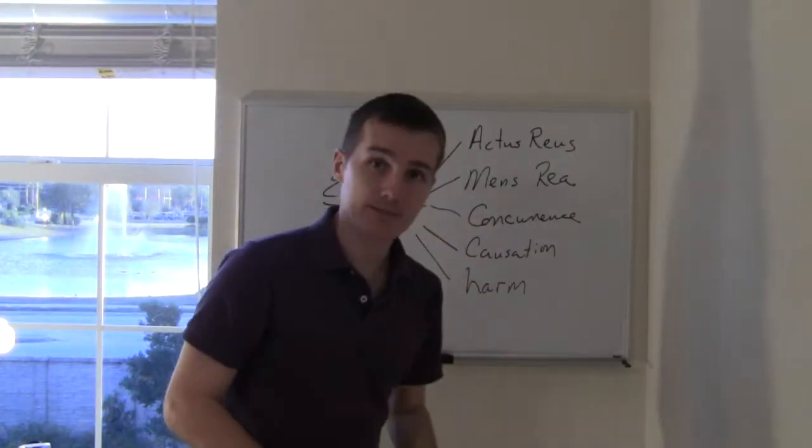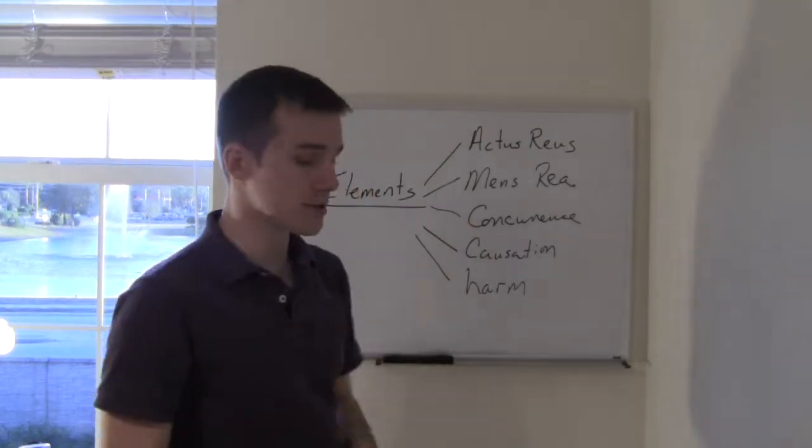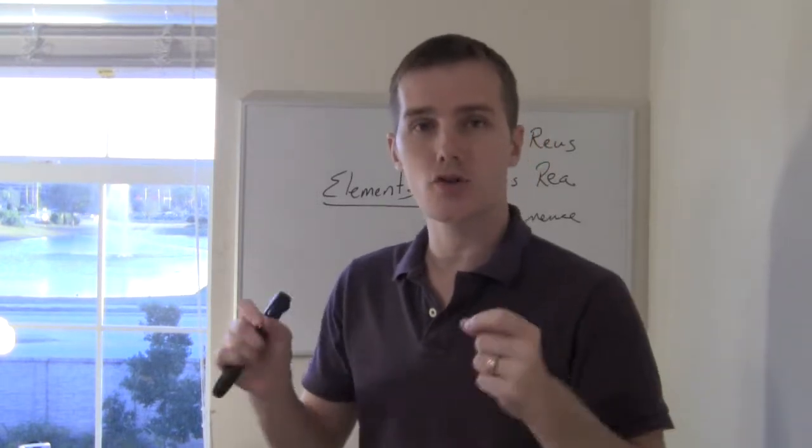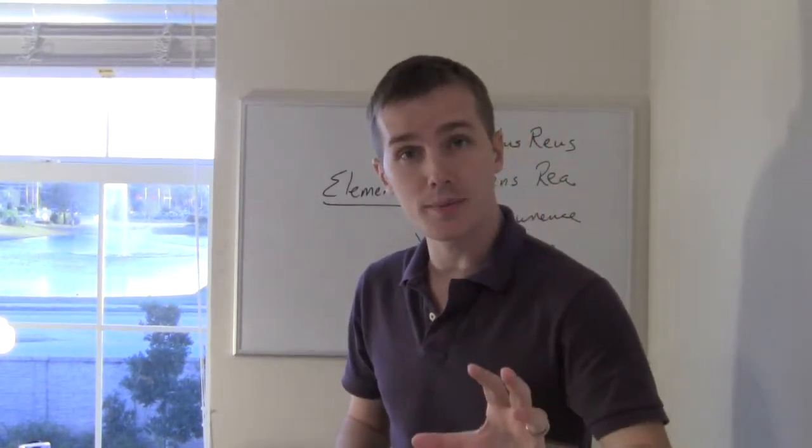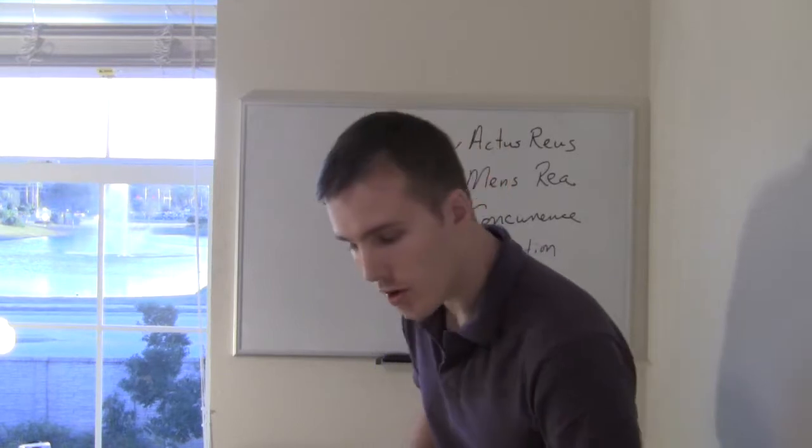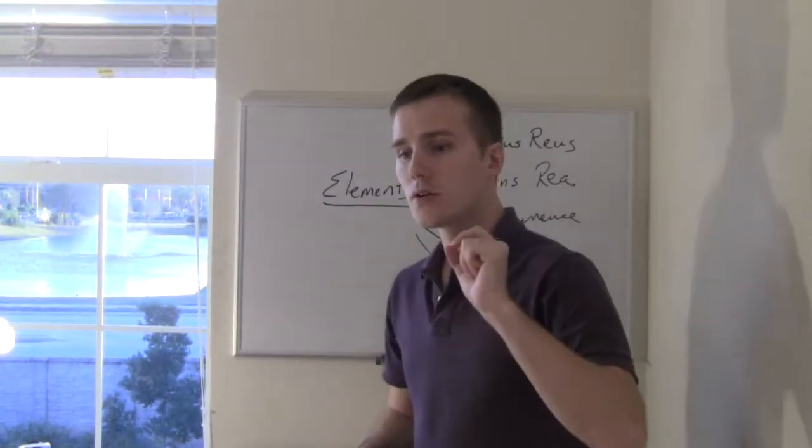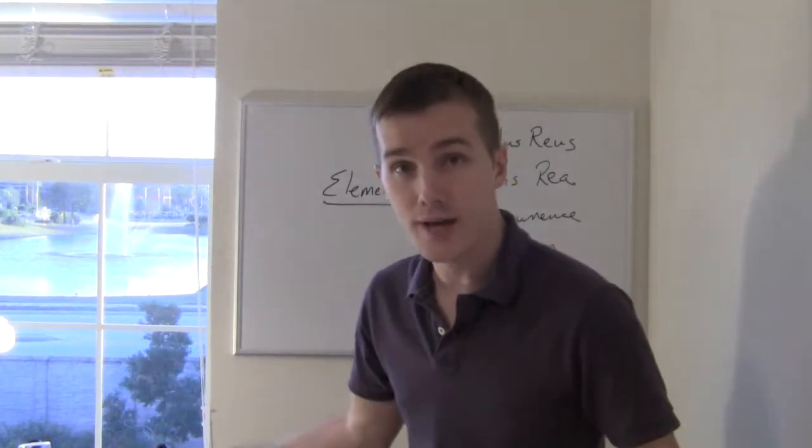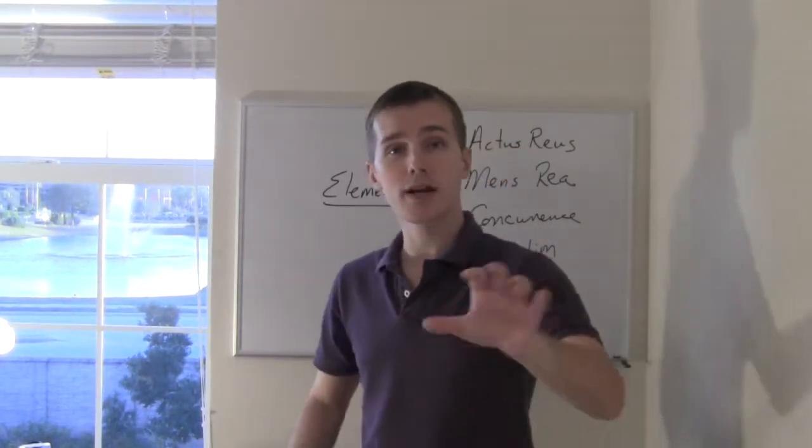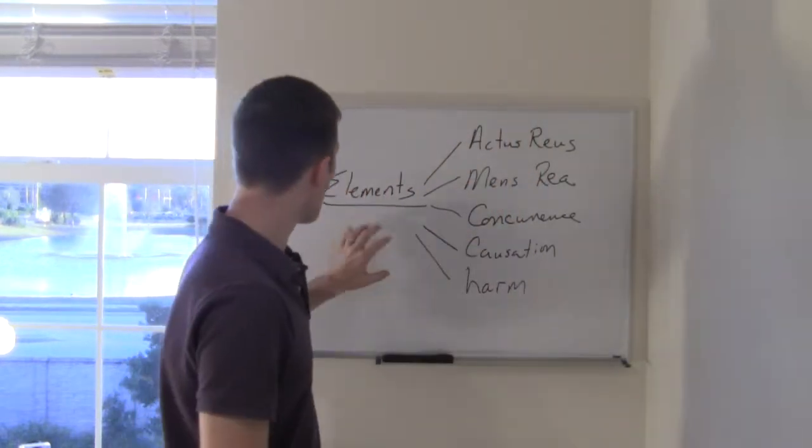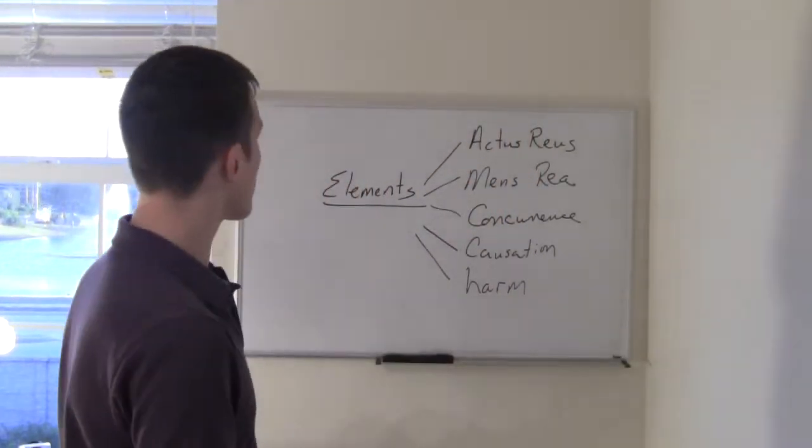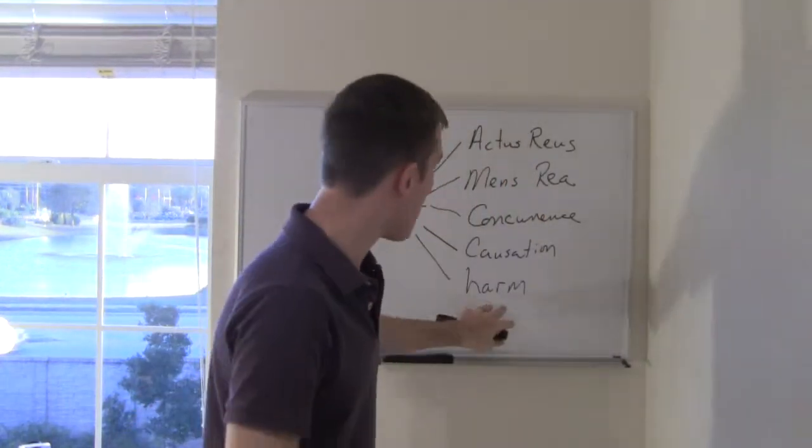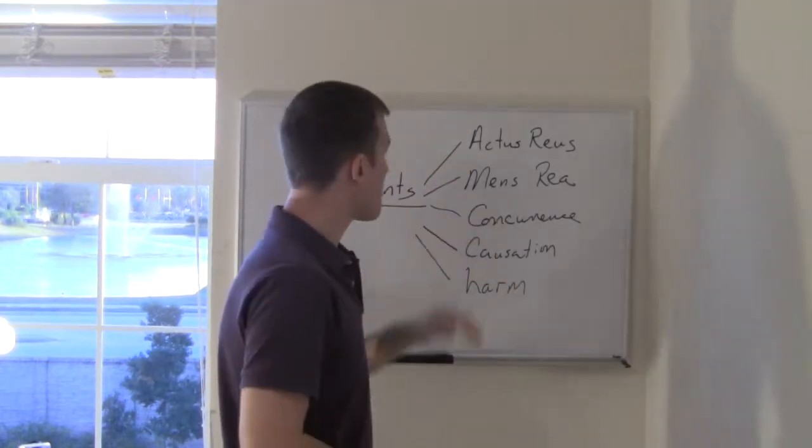This is the grab bag that legislatures have available to them when they create a criminal law. Remember what we've already talked about when it comes to a crime: the legislature creates the act you can't do and then creates the punishment for that act. Well, some of the elements that are in the grab bag—actus reus, the actual act that causes the harm which is prohibited.